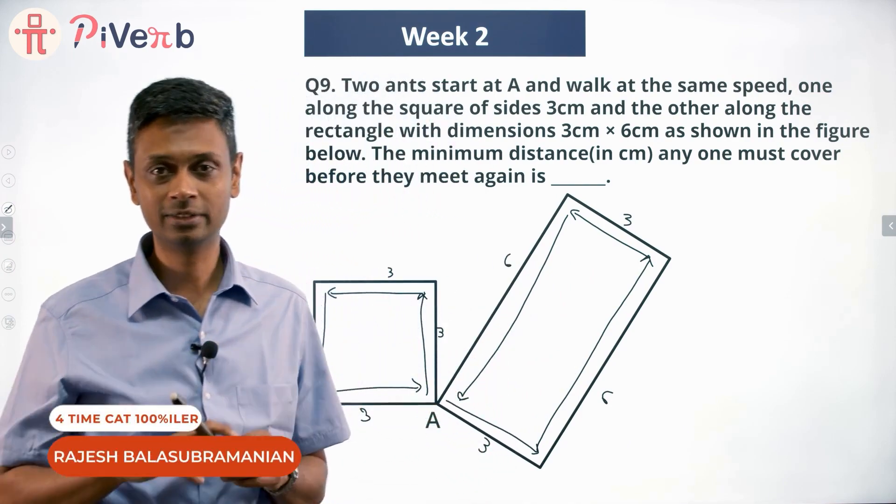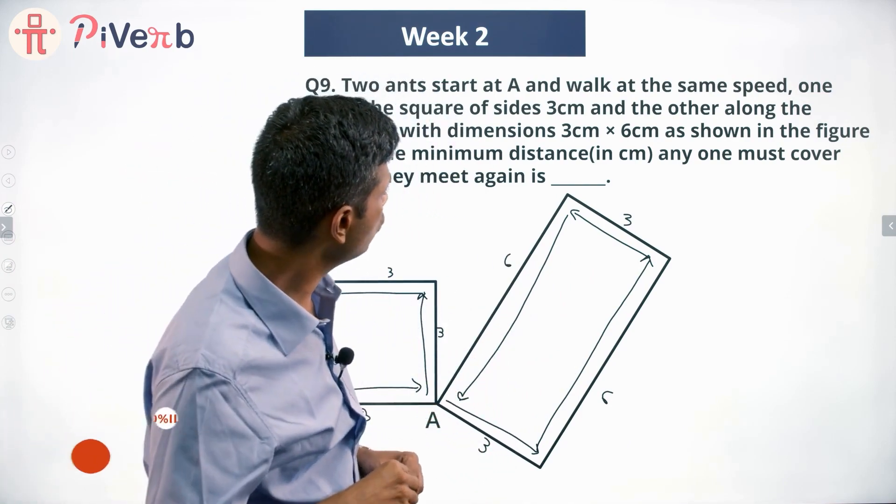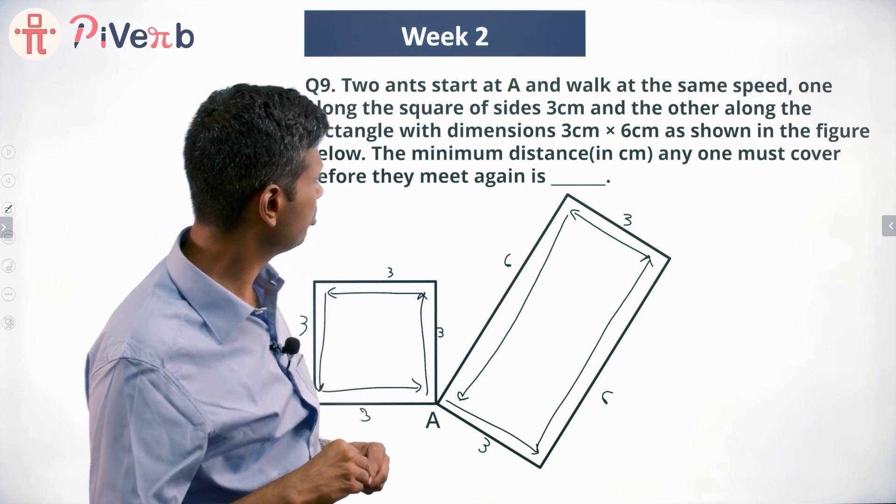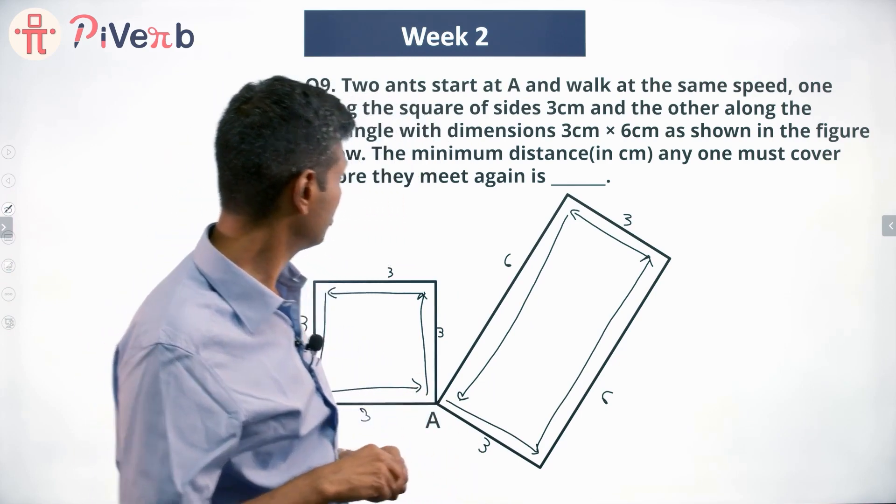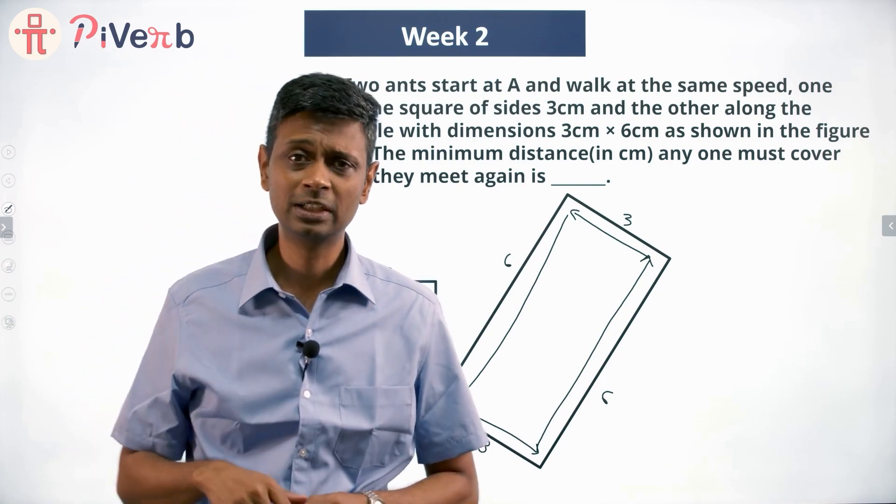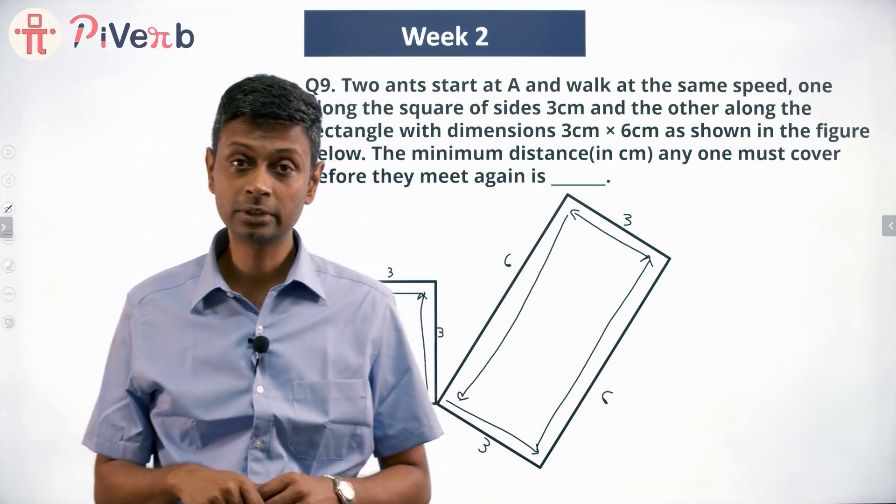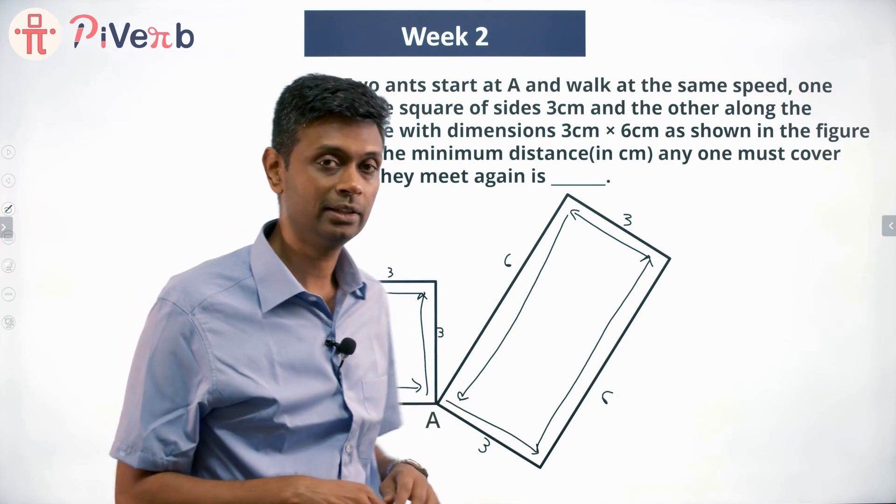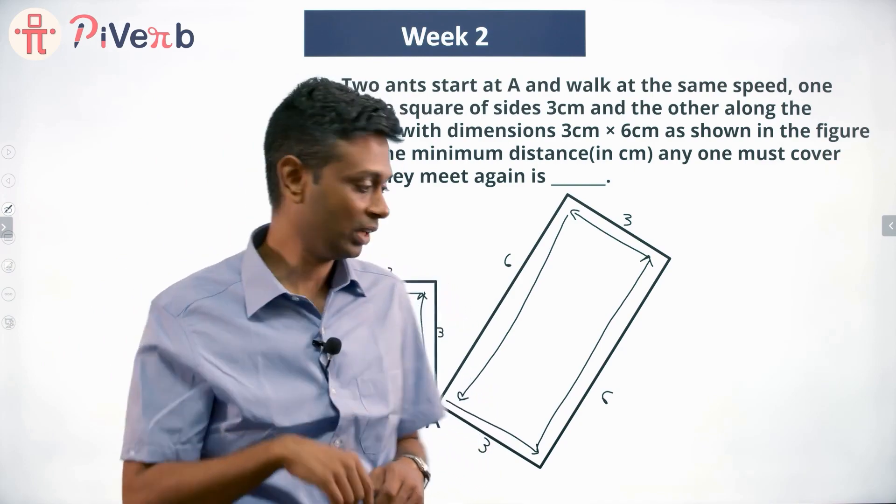First of all, the first idea is we want to know how much anyone must cover, the minimum distance anyone must cover before they meet again. Think about where they can meet between this square and this rectangle. There is only one common point at this point at A.